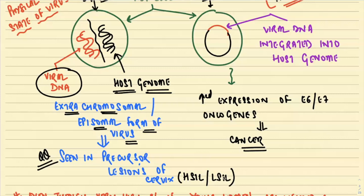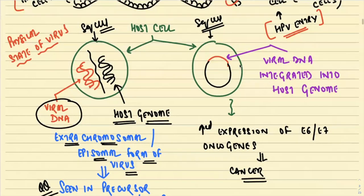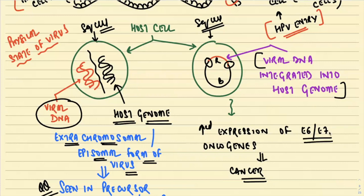The other form is where the viral DNA gets integrated into the host genome. Once this integration occurs, it leads to increased expression of E6 and E7 oncoproteins, which — as we have already discussed — leads to carcinoma.